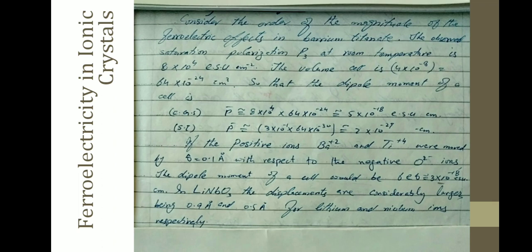If the positive ions Ba+2 and Ti+4 were moved by delta equals 0.1 angstrom with respect to negative O-2 ions, the dipole moment of the cell would be 6E delta equals 3 times 10 to the minus 18 esu centimeter. In LiNbO3, the displacements are considerably larger, being 0.9 angstrom and 0.5 angstrom for lithium and niobium ions respectively.